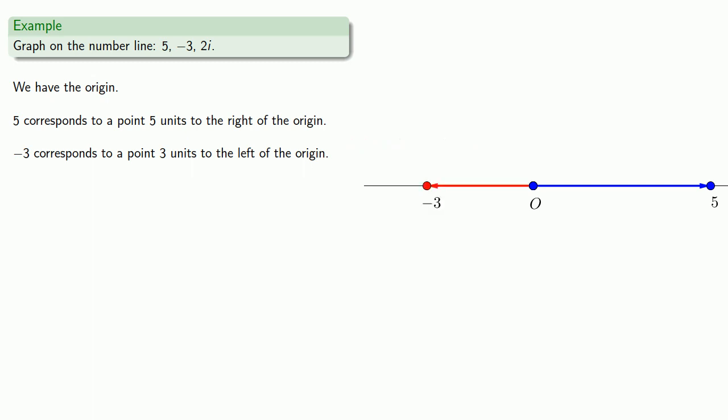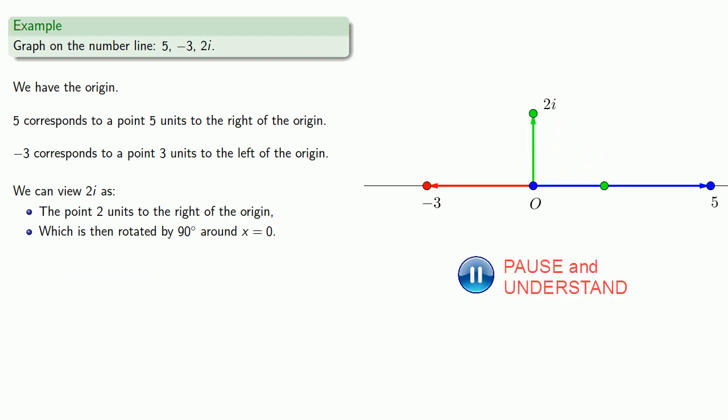What about 2i? We can view 2i as the point that's 2 units to the right of the origin, which is then rotated by 90 degrees around x equals 0. And what's interesting here is that takes us off the number line.